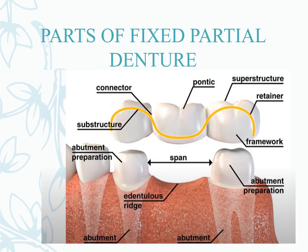The parts of a fixed partial denture include the pontic, which replaces missing teeth, the abutment teeth on either side, the connector joining the components, and the retainer.